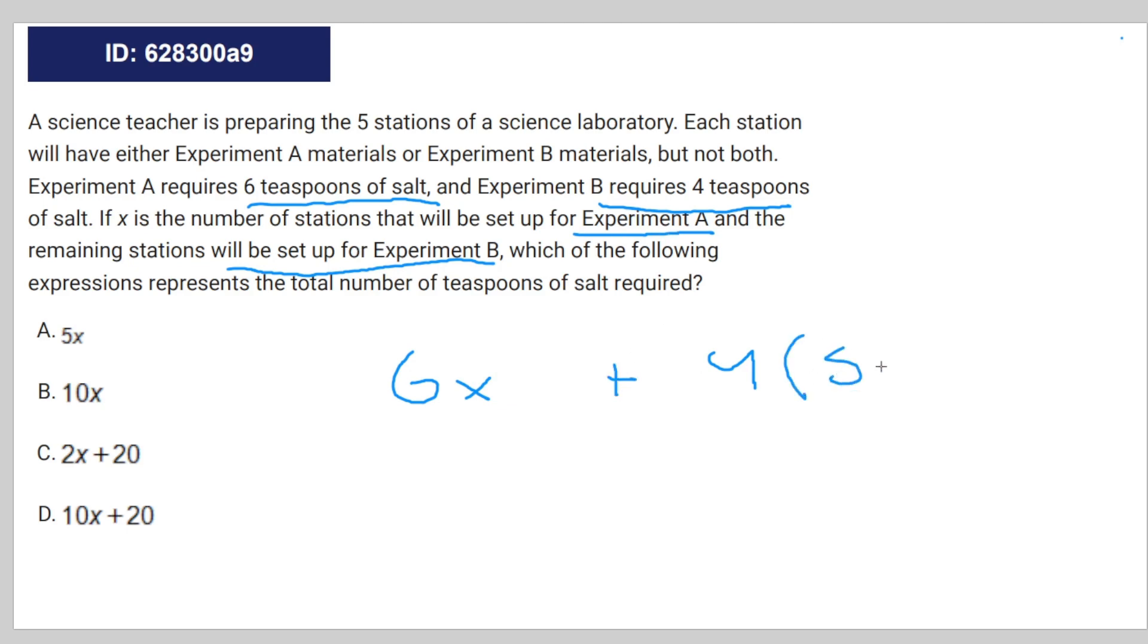And then we have five minus X, as in the remaining stations will be set up for Experiment B, which means the number of stations for Experiment B.